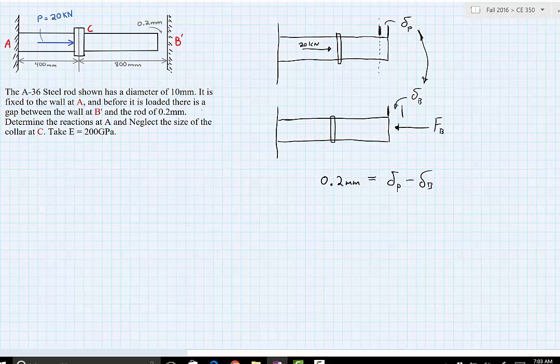Delta P, we know all the information for this. We know the force, the length, the modulus of elasticity and the area, 10 millimeters squared. So delta P is then going to equal our loading, which is P, the length. But we're only going to use this 400 millimeters because it's only applied to this portion.